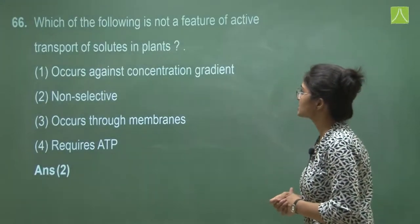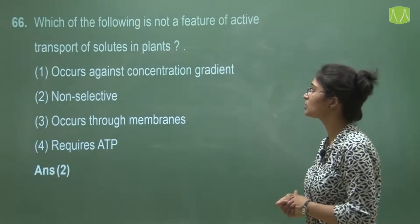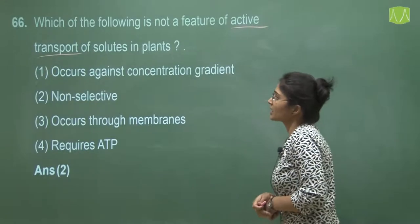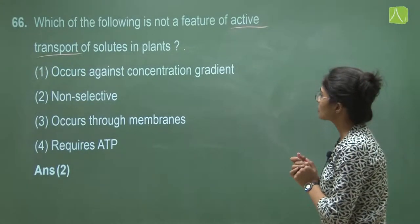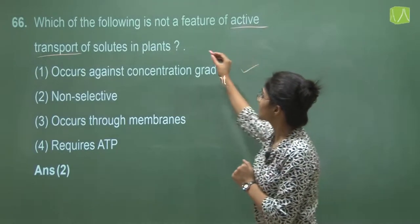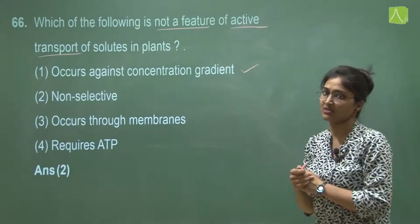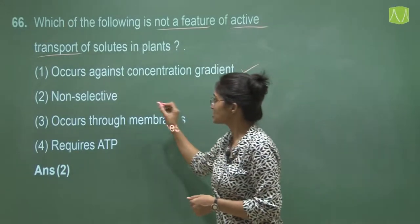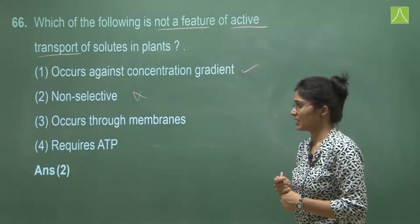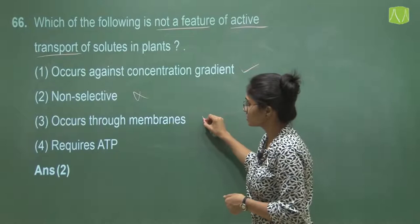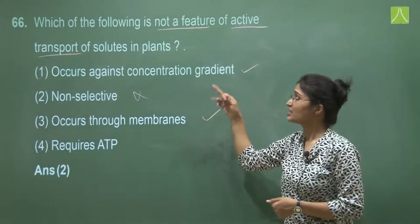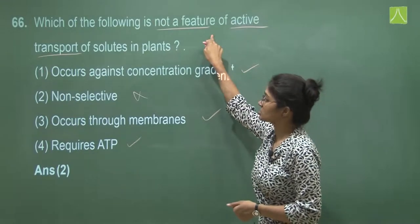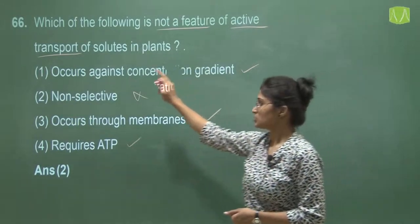Question 66 asks which of the following is NOT a feature of active transport of solutes in plants. Option one, occurs against concentration gradient — this is a feature. Option two, this is non-selective — actually active transport depends on carrier proteins and pumps, making it highly selective, so non-selective is not a feature. Option three, occurs through membrane — this is a feature. Option four, requires ATP — this is a feature since it works against the concentration gradient. The answer is option two.